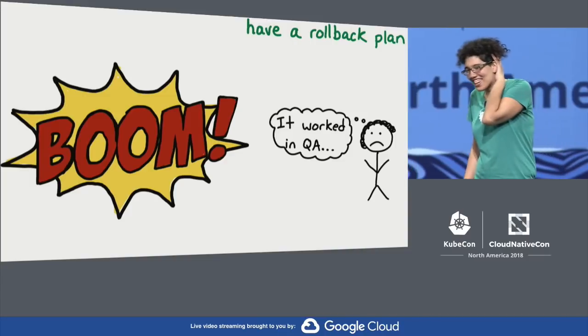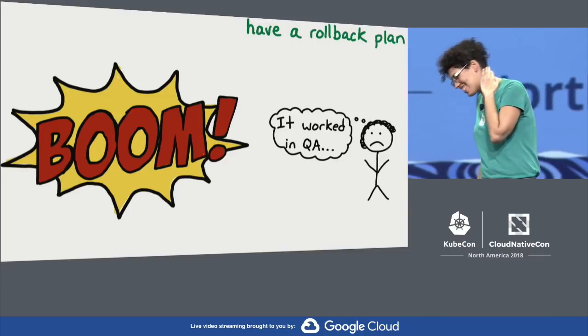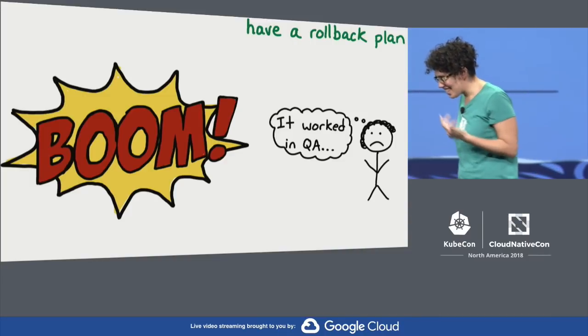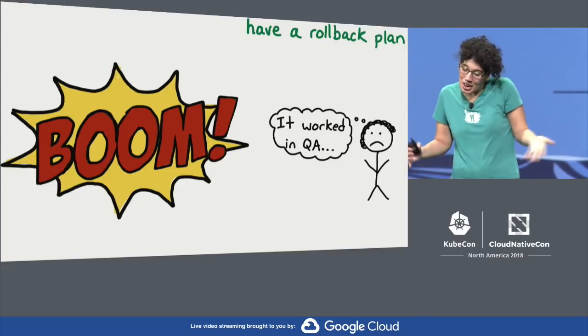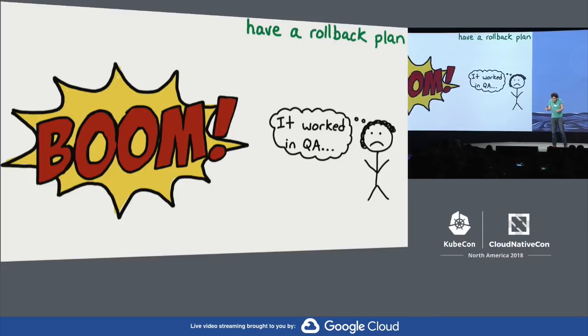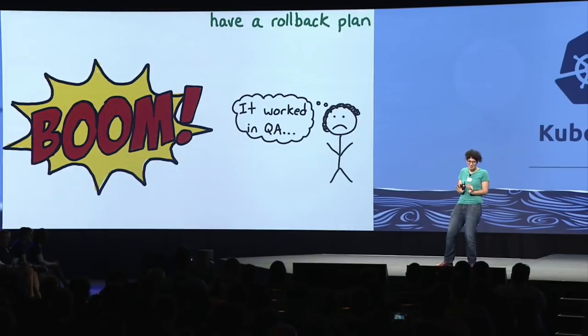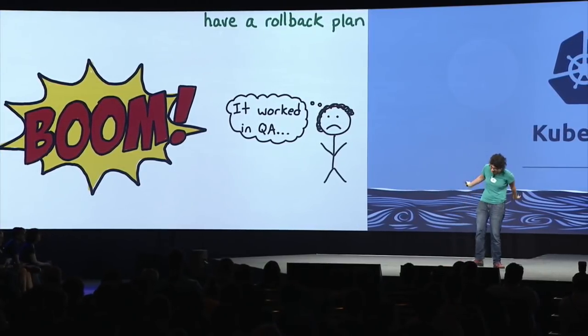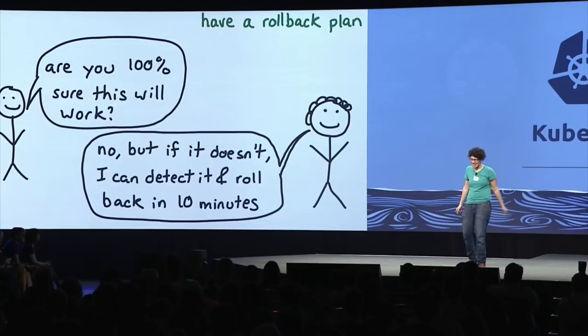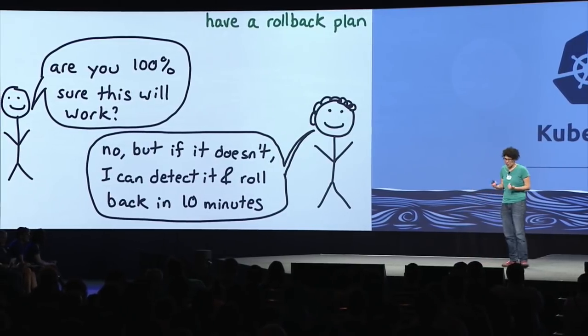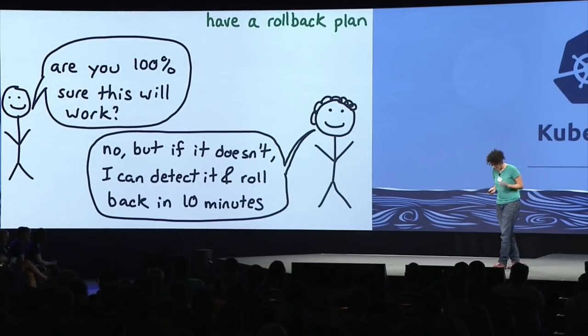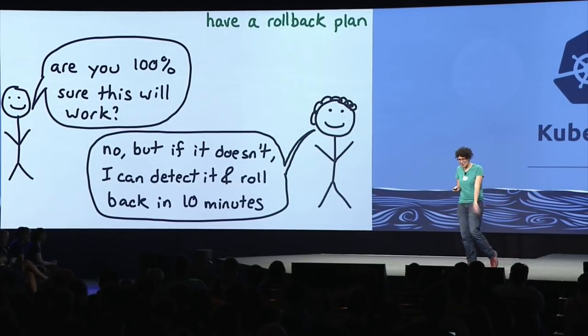Always have a rollback plan. I think this has happened to a lot of us: you thought it was going to work, and oops. It's really good when this happens that you can say 'I just rolled this up to 1% and I'm going to roll it back down to 0%.' Going into every change with a plan for how to detect if it goes wrong, and how to roll back in five minutes if it does, makes me sleep a lot better and makes my deploys feel a lot safer.